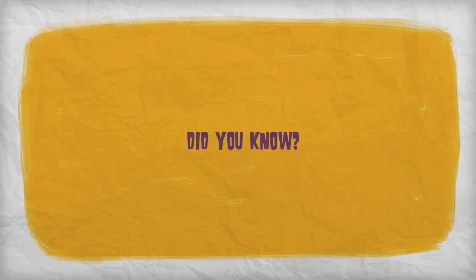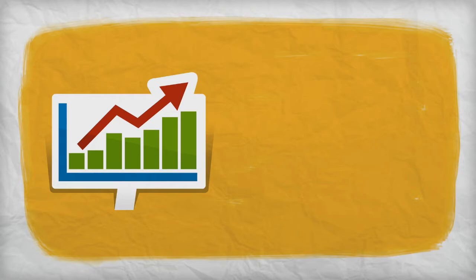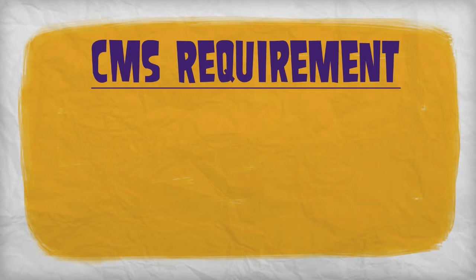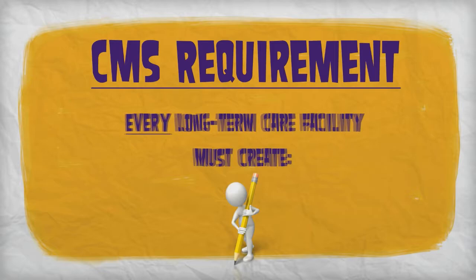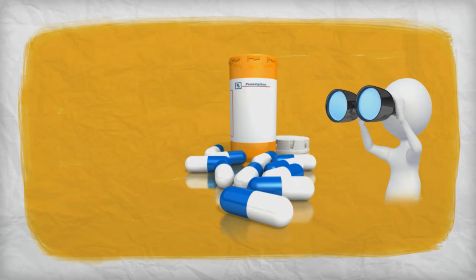Did you know that F329, unnecessary drugs, is one of the top-cited nursing home deficiencies in the United States? Why, you ask? Well, according to CMS, every long-term care facility that accepts Medicare or Medicaid must create an individualized medication care plan and monitor every resident medication that poses a potentially significant interaction.